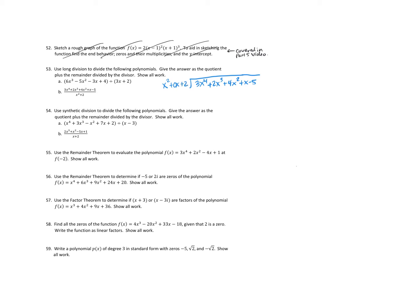What do I need to multiply x squared by to get 3x to the 4th? So it's going to be 3x squared. So 3x squared times x squared is 3x to the 4th. 3x squared times 0x is plus 0x cubed. And 3x squared times 2 is plus 6x squared. And then I want to subtract all of those things. That gives me negative 2x squared plus x.